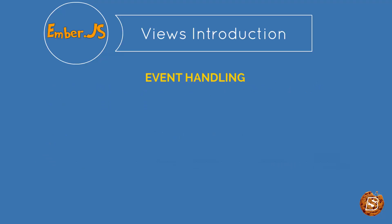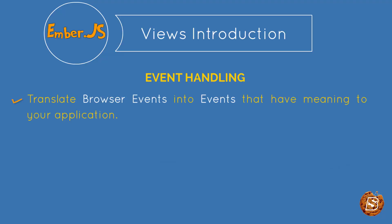The role of the view in an EmberJS application is to translate browser events into events that have meaning to your application. So you might have certain events like on clicking you need to submit a review, and that can be taken care of by the view itself.